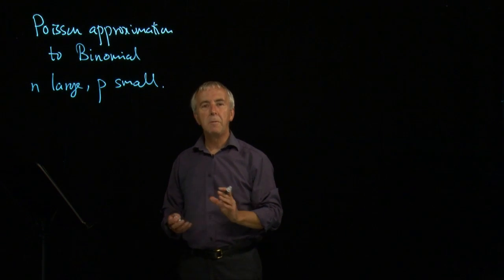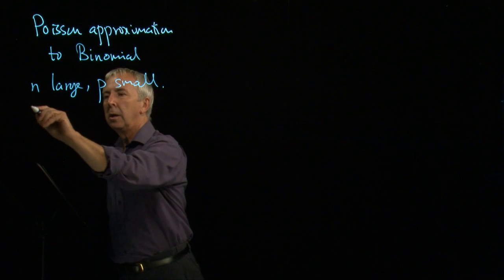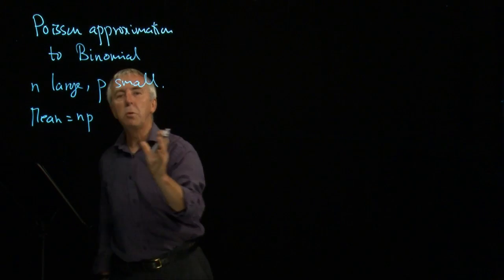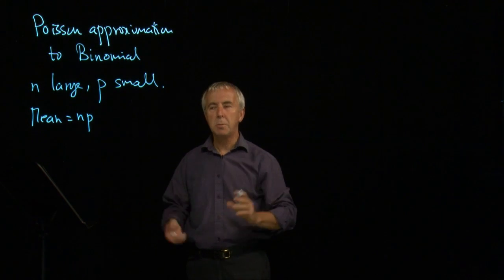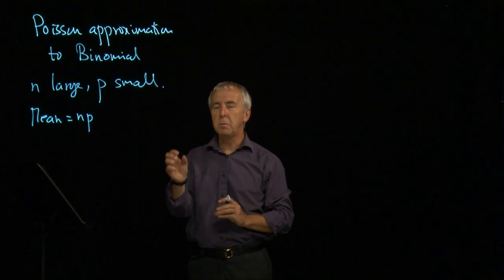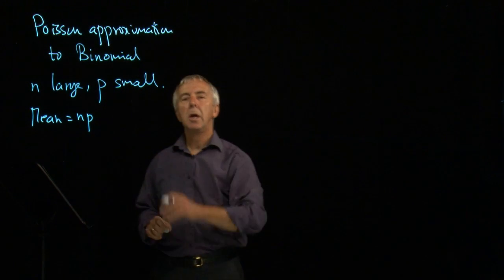But we know that we can find the mean of a binomial simply by np. So the mean is np and this would come out as a reasonable size number.